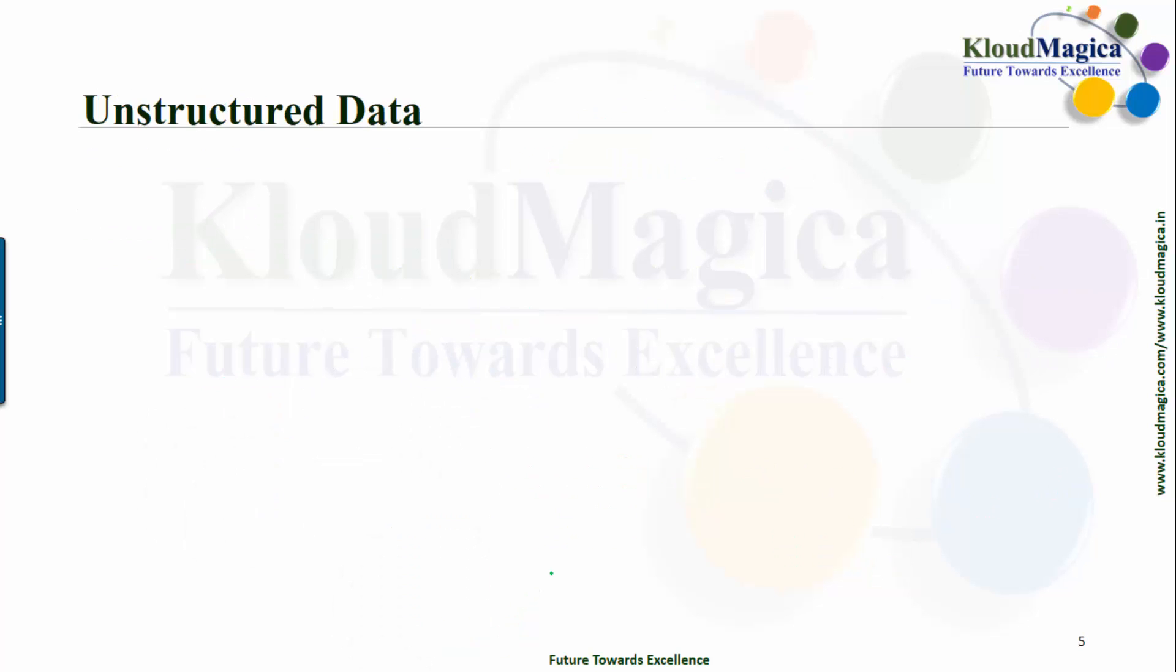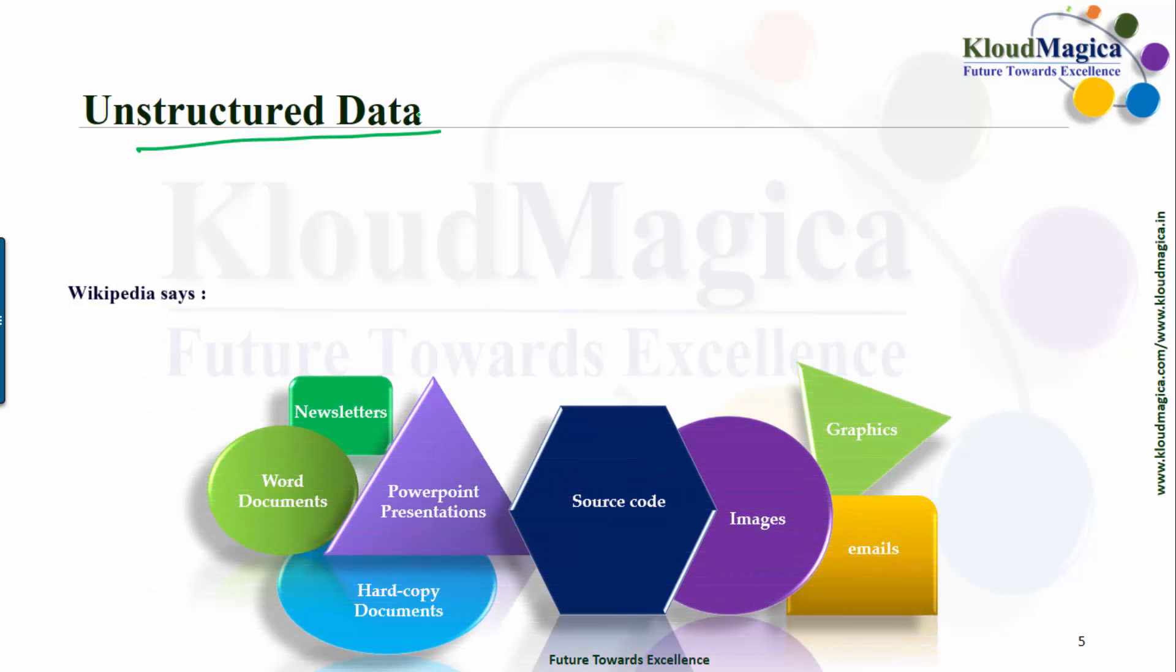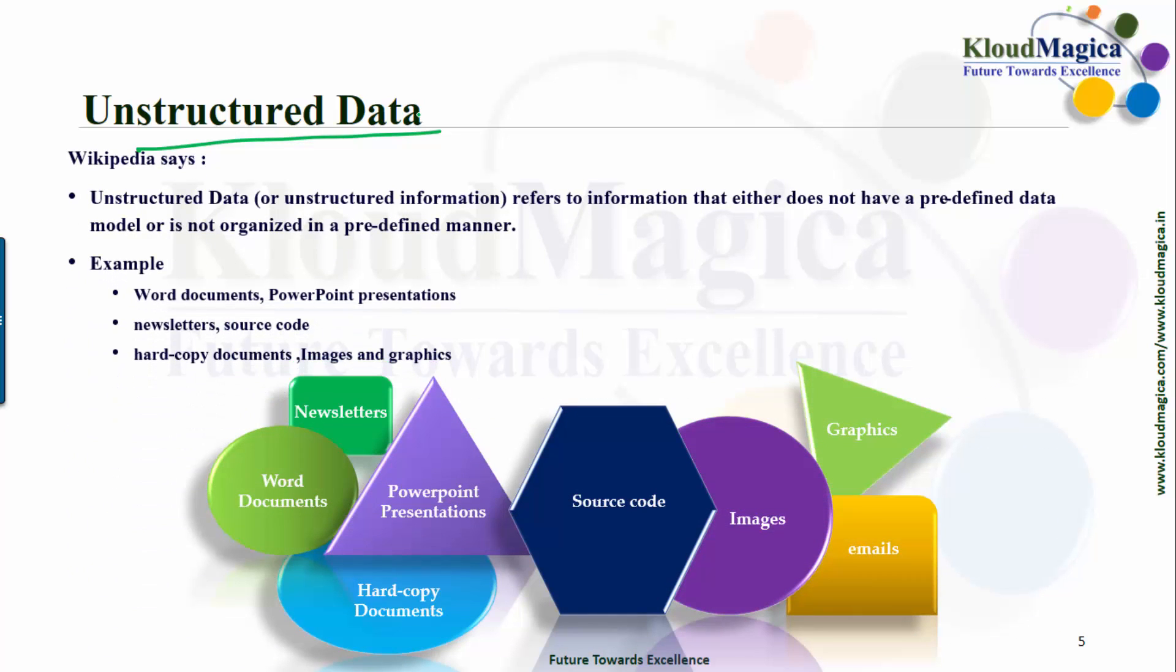So what is unstructured data? The unstructured data is basically some piece of information that does not fit in a traditional row column database. We can understand by name that unstructured data is something which is just opposite of structured data. Wikipedia says unstructured data or unstructured information refers to information that either does not have a predefined data model or is not organized in a predefined manner.